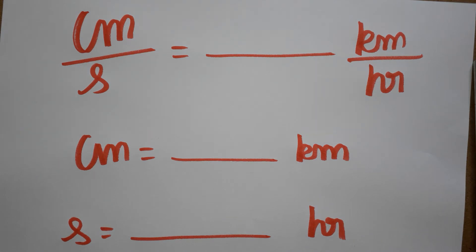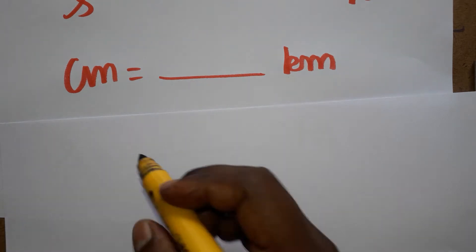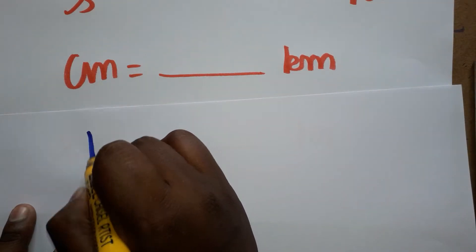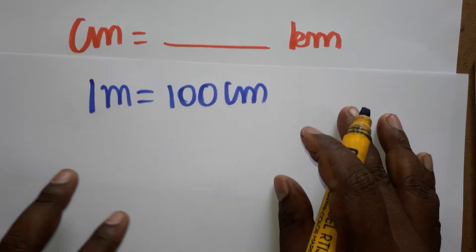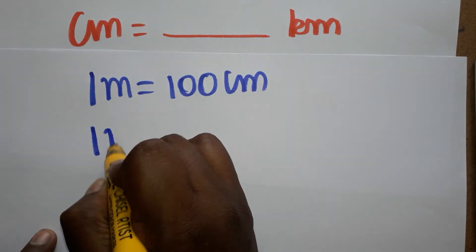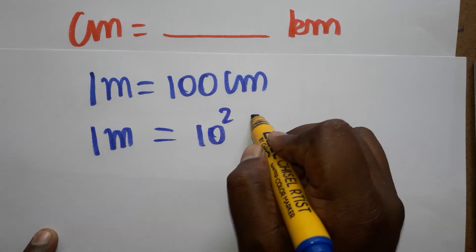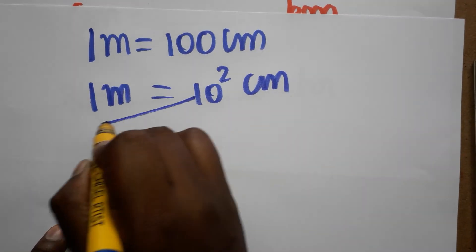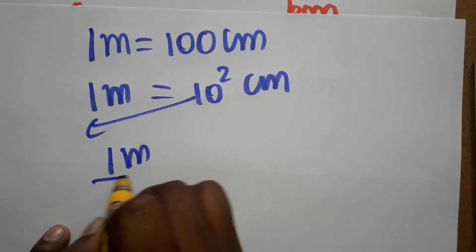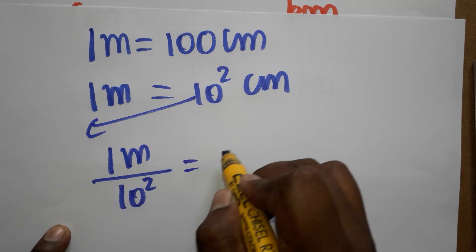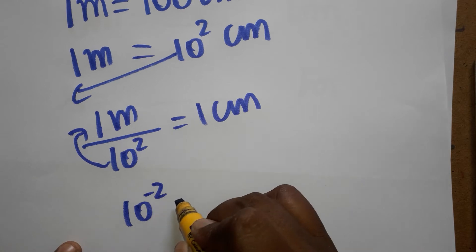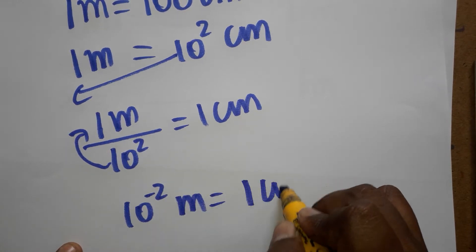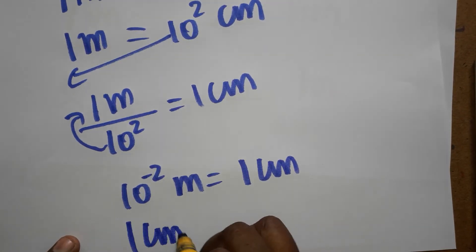First we will see centimeter to kilometer. I am going to relate both in terms of meter. One meter is 100 centimeter, so that we can take it as 10 power 2, meaning 10^2 centimeter. Bringing 10^2 to the denominator: one meter divided by 10^2 equals one centimeter. Bringing it to the numerator: 10^-2 meter is equal to one centimeter.